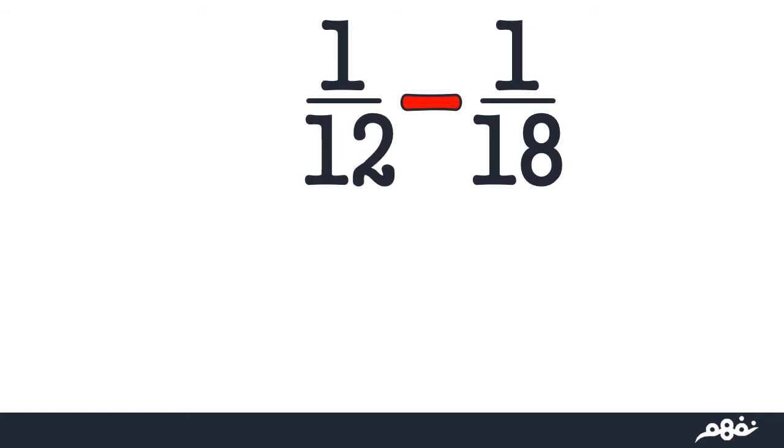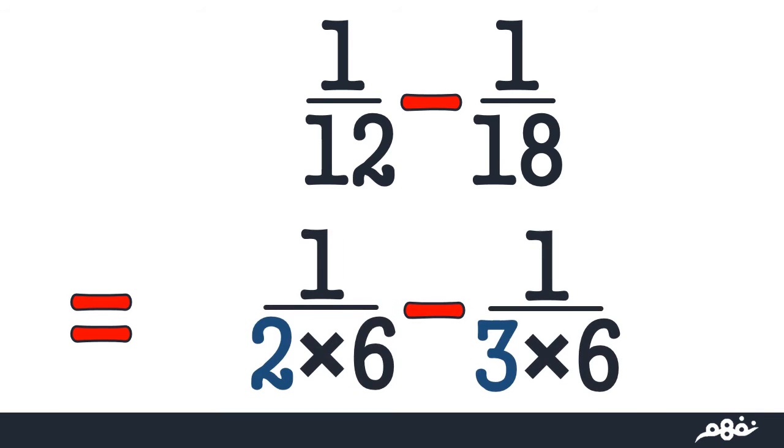What if we don't have the same denominator? Like 1 over 12 minus 1 over 18. First of all, we have to look deeply to find that 12 and 18 share a common factor, which is 6. Like saying 1 over 2 times 6 minus 1 over 3 times 6. So 3 is odd to 12, and 2 is odd to 12. So we multiply each term...